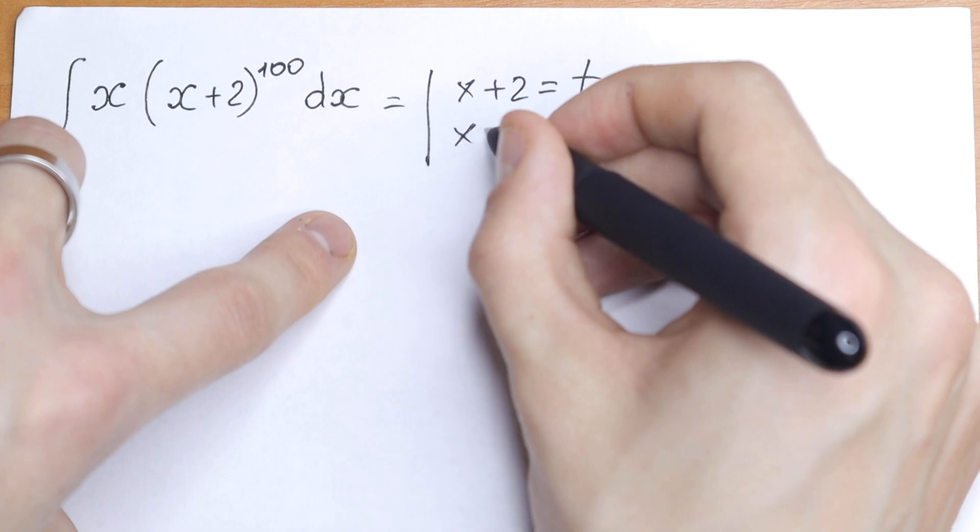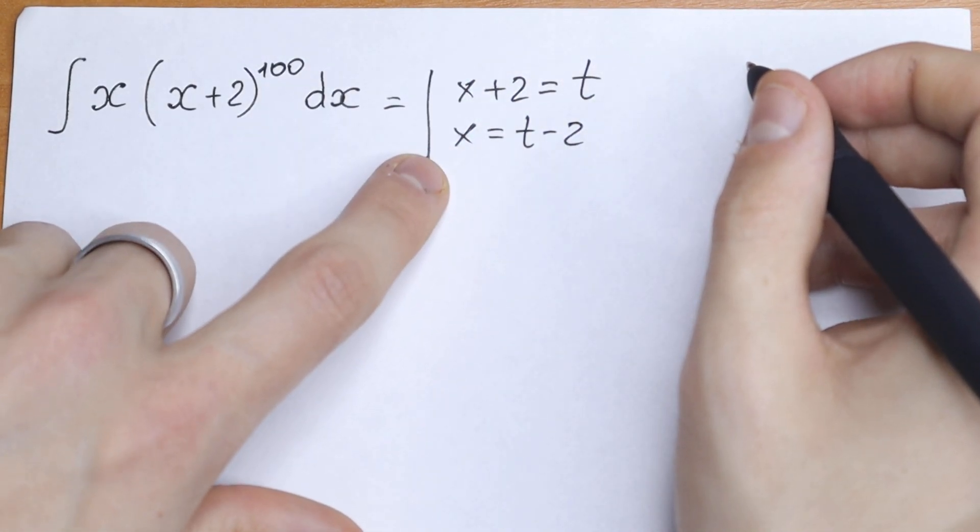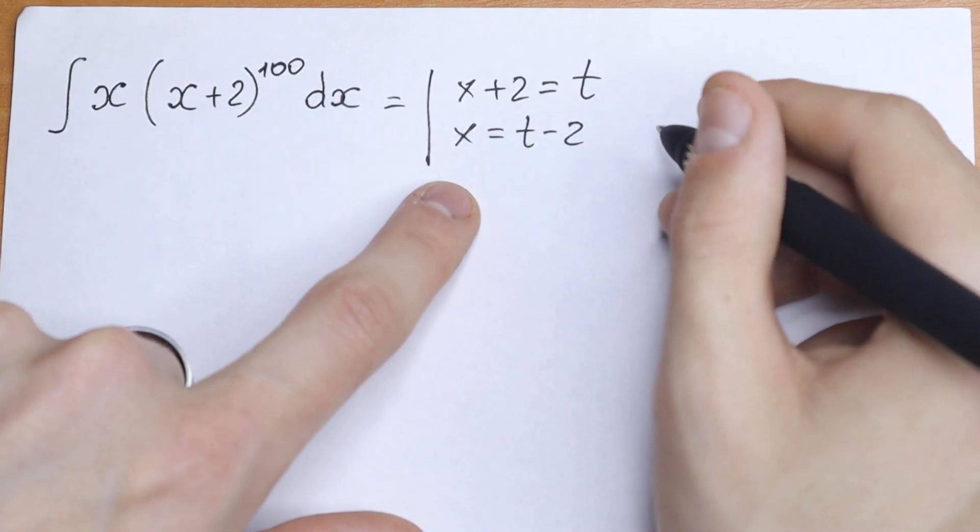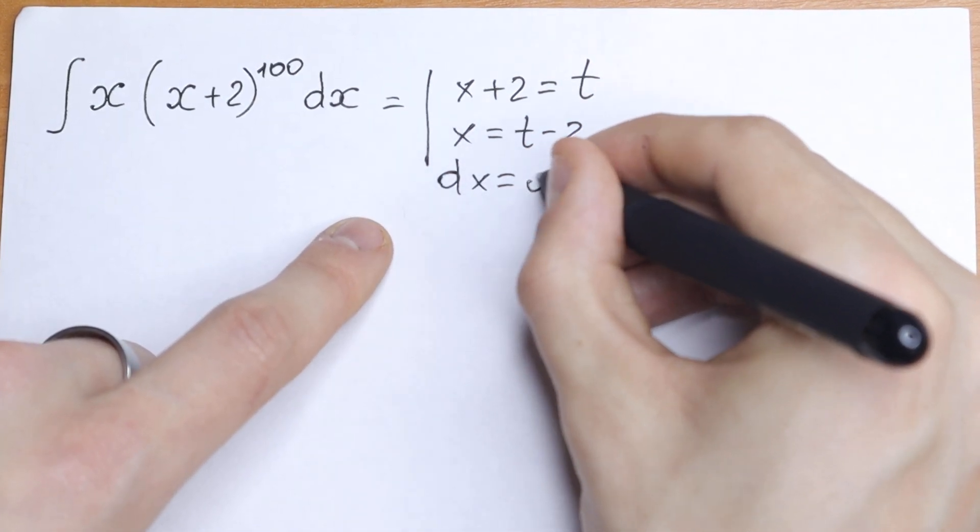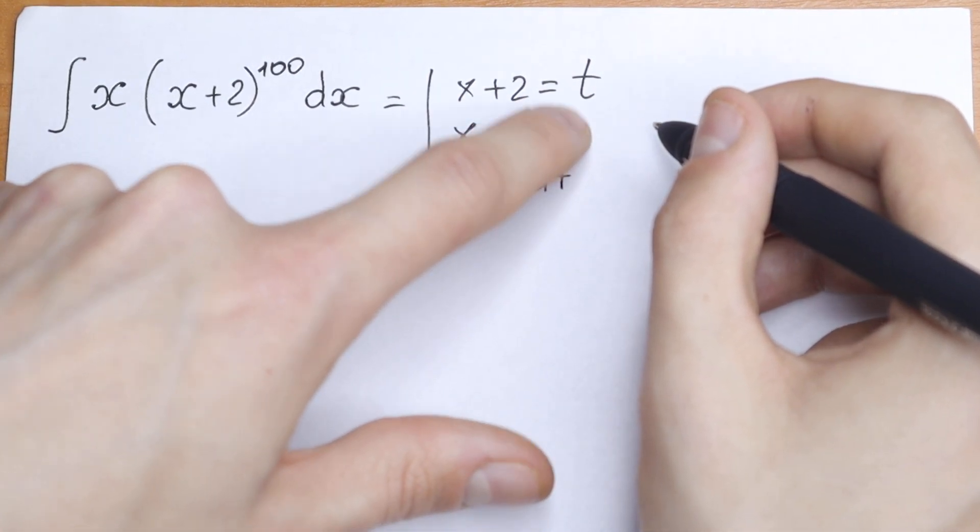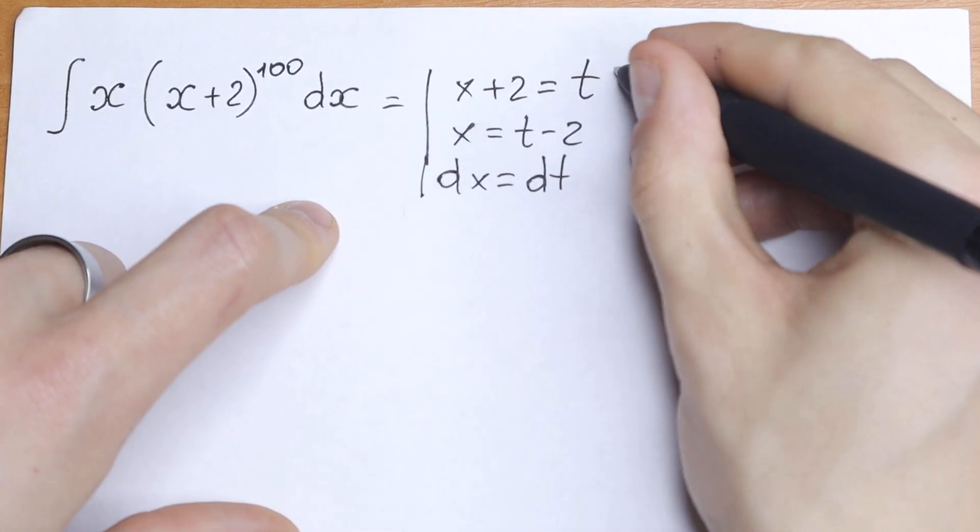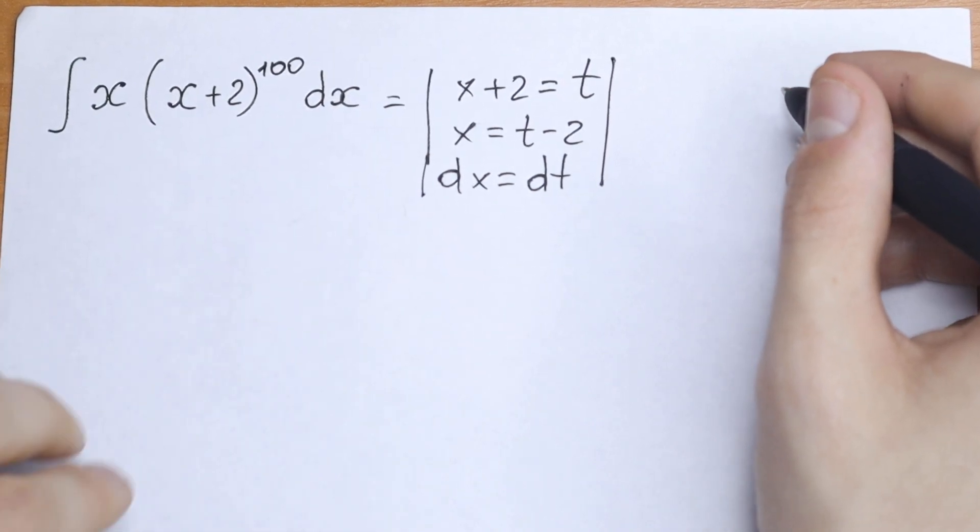So let's take a substitution right here. Let's find our x as well. x equal to t minus 2 and finding derivative because we need to change all of these elements. This is our t, let's find our dt. As a result dx will be equal to dt because this is a classic simple case. t minus 2 derivative will be dt.